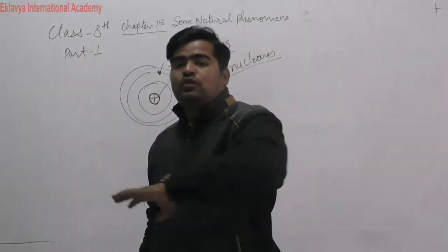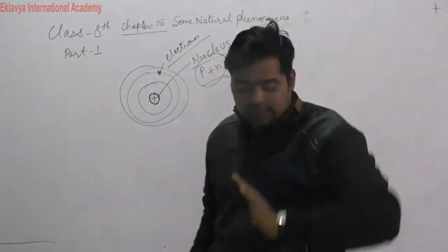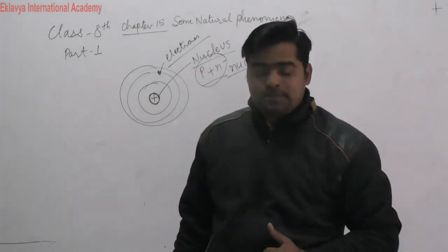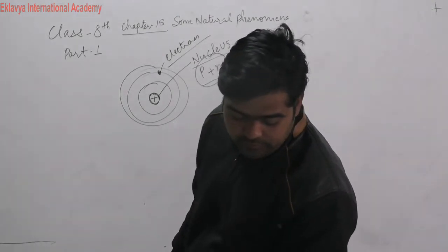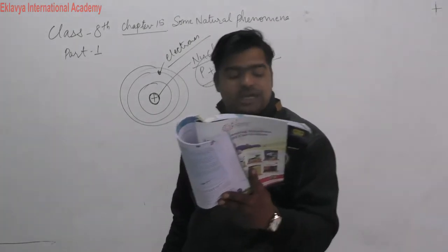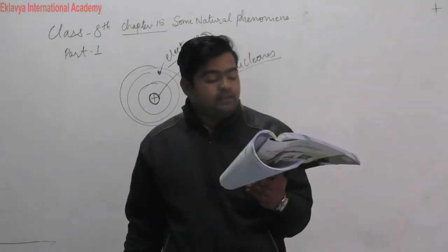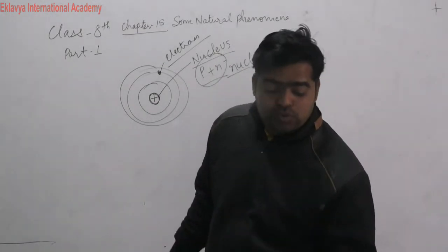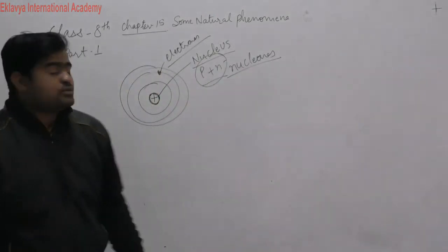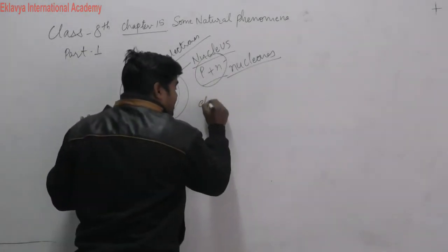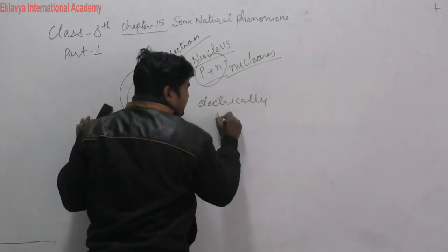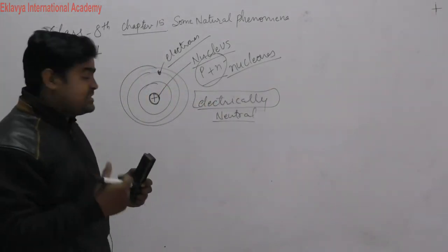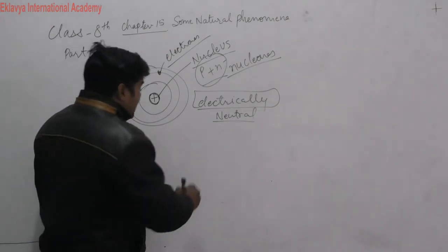In any atom, all positive charge collects into the nucleus, while the negatively charged particles — electrons — revolve around the nucleus on all sides. Thus, we can say the positive charge is concentrated at the center of the atom, while the negatively charged particles move around the nucleus. The atom as a whole is electrically neutral — electrically neutral means the atom has no net charge.